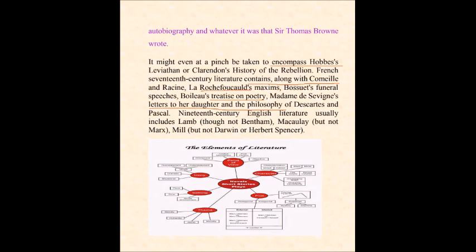Moving to the 19th century, we have English literature which usually includes Charles Lamb — though not Bentham. Sometimes we can find in the writings of Bentham some beautiful passages and essays that are really better than Lamb's, but many critics, theorists, and philosophers exclude Bentham's writings from being literature. Macaulay, but not Marx — Macaulay's writings are called literature, but the writings of Marx are not, and neither are Darwin's or Herbert Spencer's.